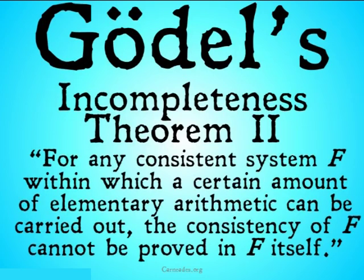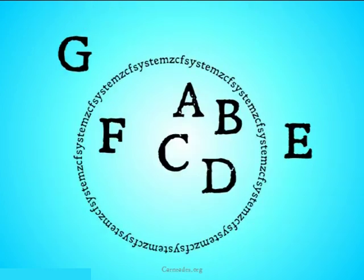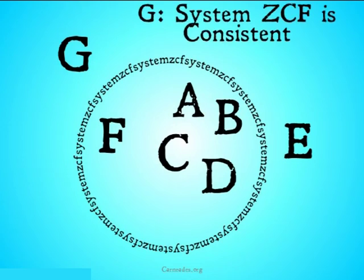This is the statement, this is a corollary from the original. For any consistent system F within which a certain amount of elementary arithmetic can be carried out, the consistency of F cannot be proved in F itself. So one of those statements that system F cannot prove is that system F is consistent. Wow. All right. What that means is one of those statements that's outside the reach of our system is that that system is consistent. Whew.